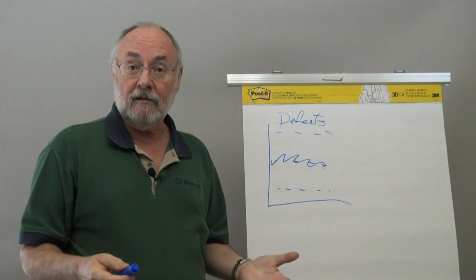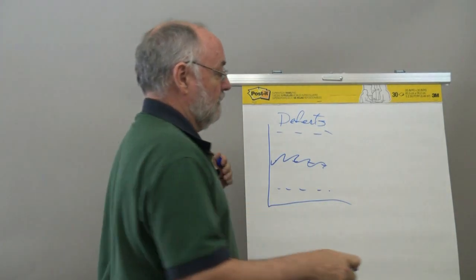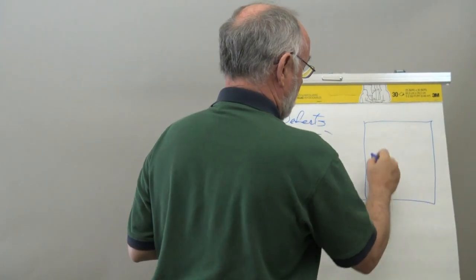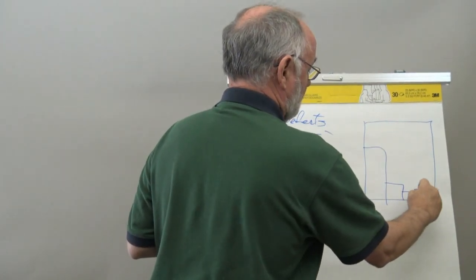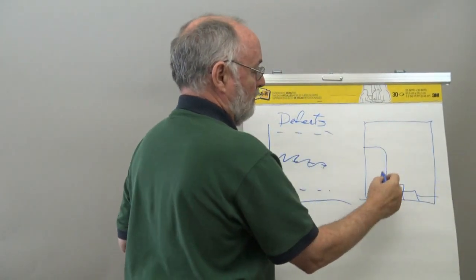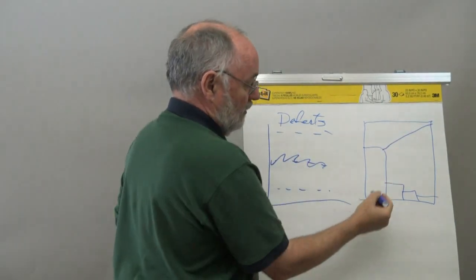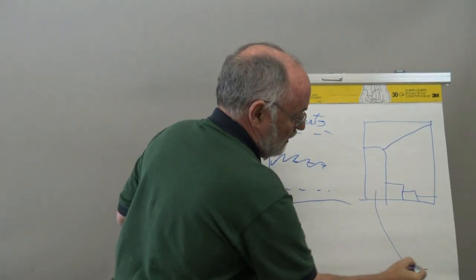Then they went ahead and did a Pareto chart of the different types of defects and there was some big bar. And that big bar became the head of the fishbone.